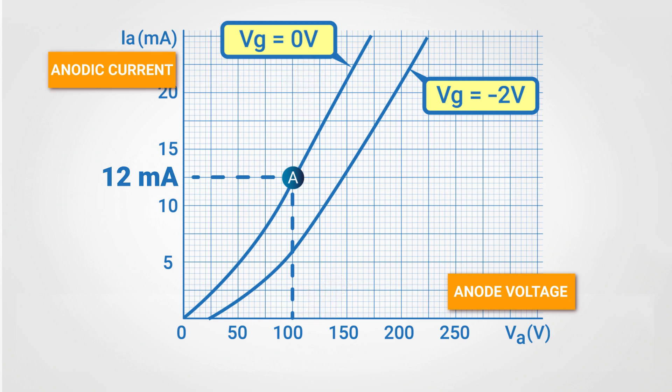When instead the triode operates under point B conditions, in which the anode voltage is always 100V but the grid voltage is now minus 2V, the anode current will be just 6mA. This is a very interesting example that allows us to understand that the anode current in a triode depends not only on the anode voltage, as in the case of the diode, but it also depends on the grid voltage. In fact, it is possible to change the anode current by only changing the grid voltage and leaving the anode voltage unaltered.